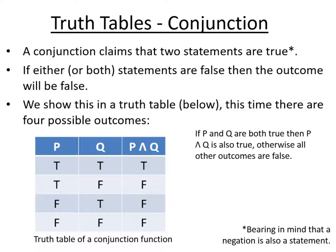For all three of the other lines there is at least one statement that is false, so if they are not both true then the outcome of a conjunction is false. The final output of the conjunction truth table is: true, false, false, false.